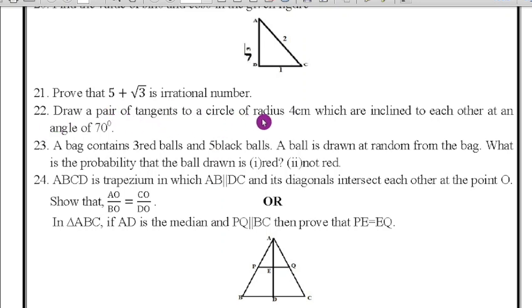Question number 22: draw the pair of tangents of a circle of radius 4 cm which are inclined to each other at an angle 70 degrees. So 180 minus 70, then you will get 110 degrees. Question number 23: a bag contains 3 red balls and 5 black balls and a ball is drawn at random from the bag. What is the probability the ball drawn is red and not red? Here totally how many balls are there? 5 + 3 = 8. So the probability of red is 3/8 and not red means 5/8. Easily you will get 2 marks.